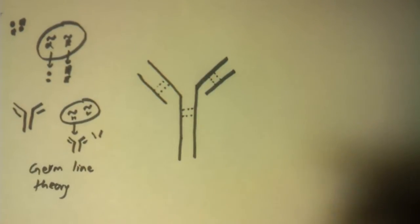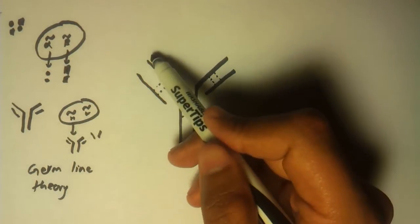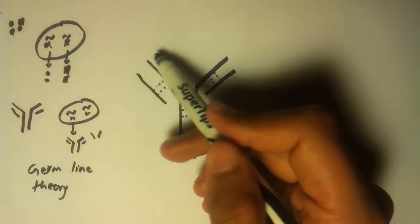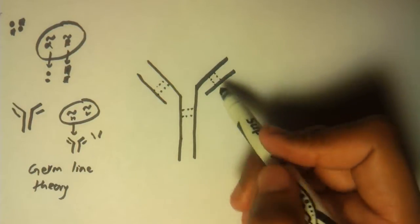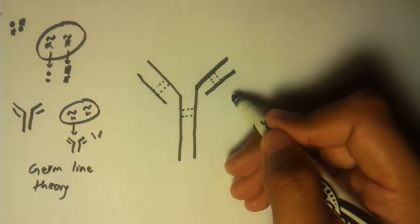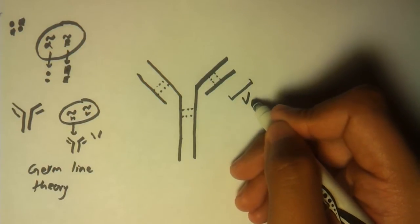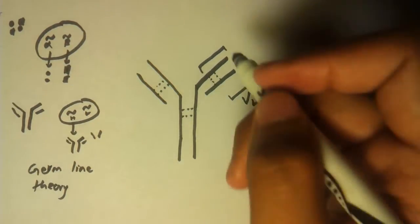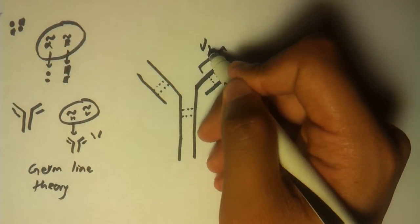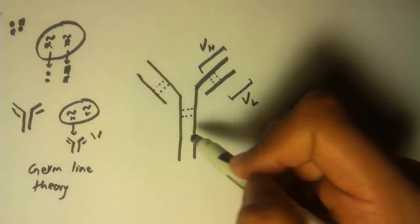The top part of the antibody is what binds to the antigen, and these are called variable regions. For this light chain, this top part is called variable region of light chain, or VL. For this part, we would call it VH, variable region of heavy chain. Same goes on this side.